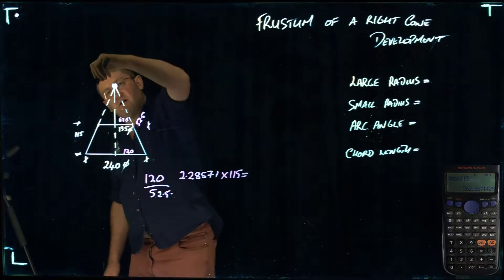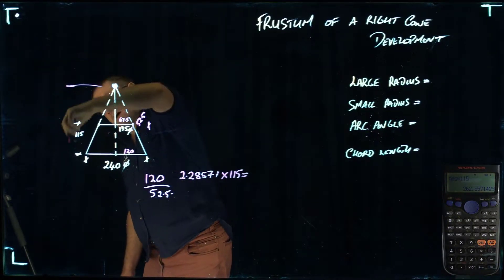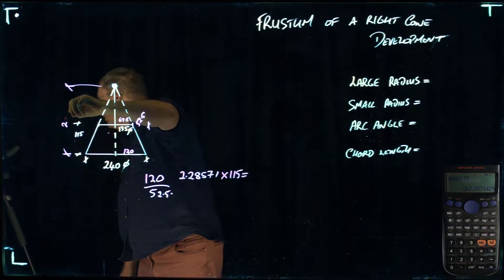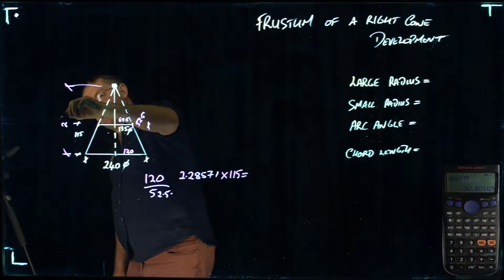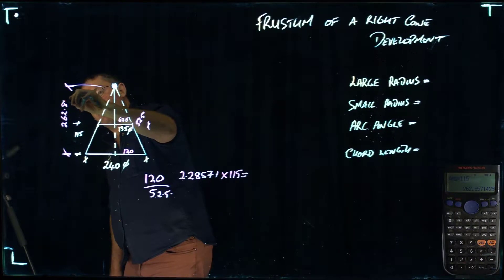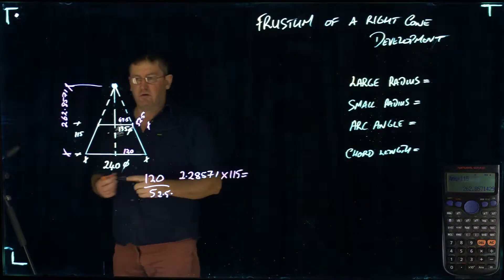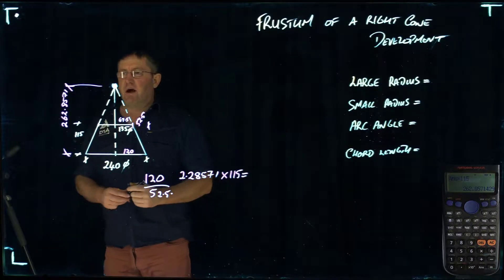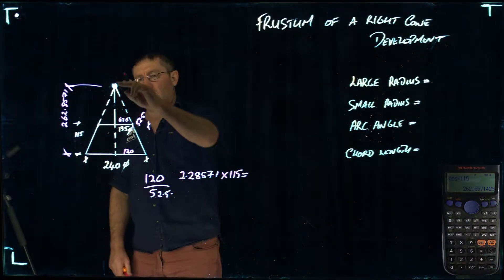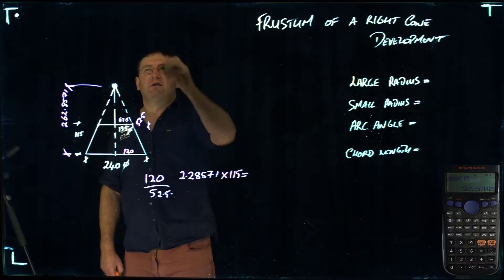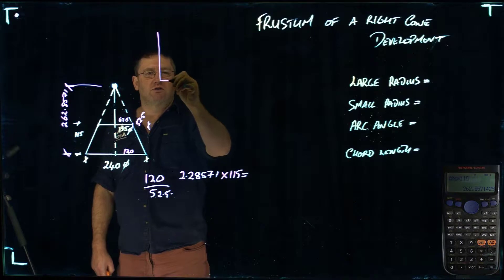I get a distance from the apex if I project out here from the base. I get a height here of 262.8571, and that's the accuracy that I'm going to do it to. So now we have a new cone or a triangle that we can now apply Pythagoras' theorem to.